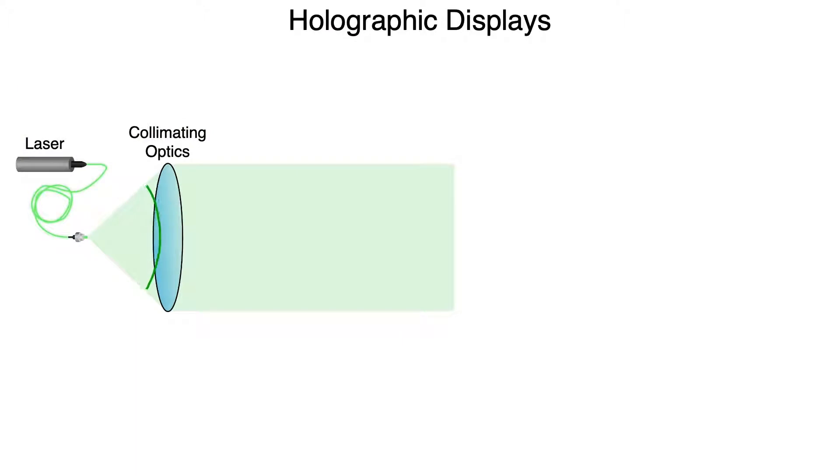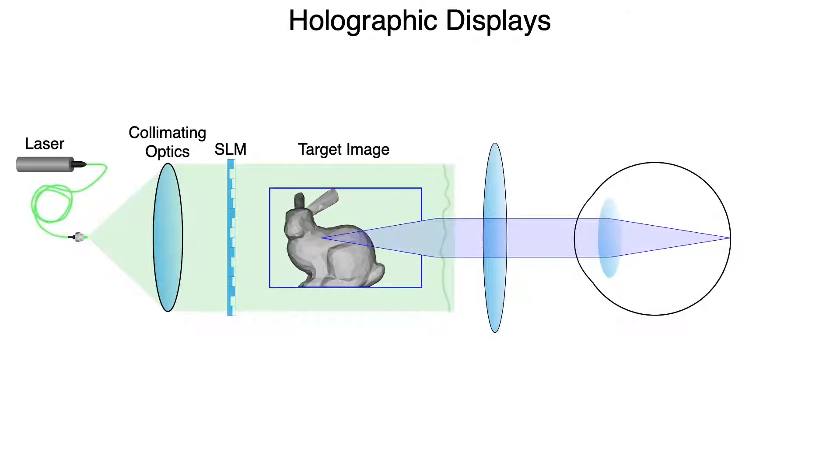A hologram is produced with coherent laser light that is projected on a spatial light modulator, or SLM, which delays the phase of the wave field in a programmable manner. As the field continues to propagate, it creates interference patterns that are observed as an image by a user, for example, in a near-eye display.